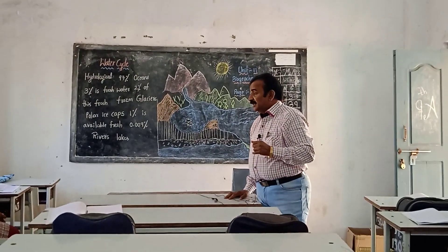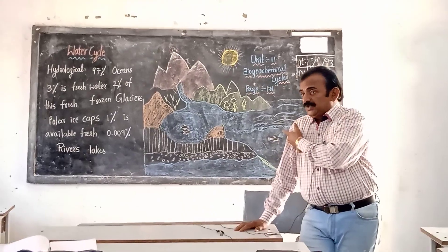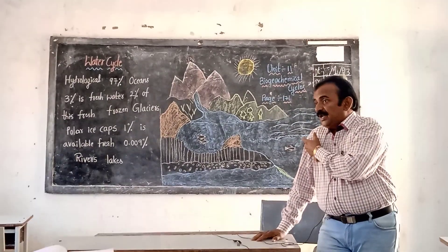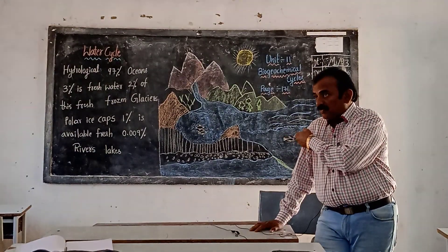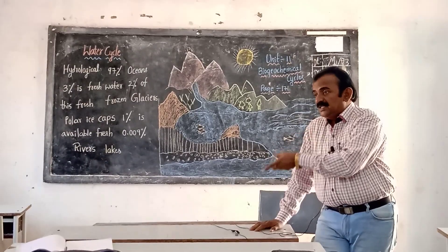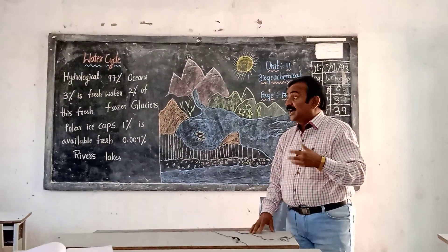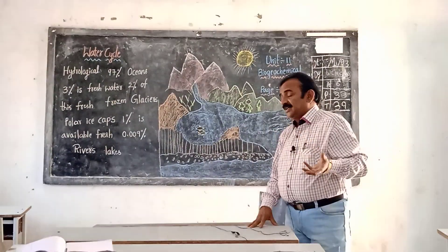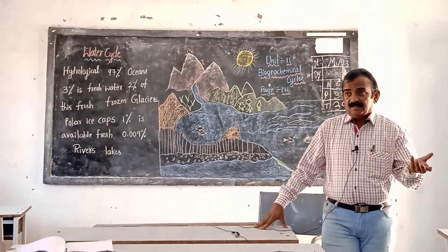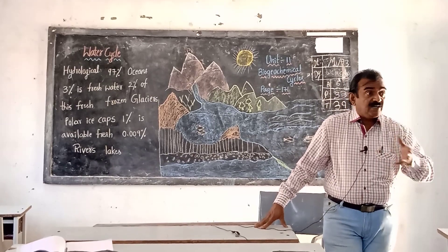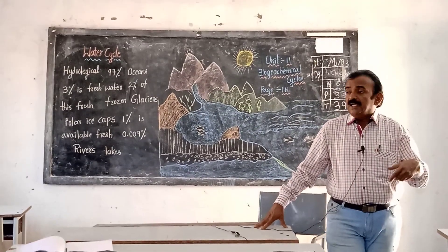That glacier water we are not using. Only 1 percent of water is present in the ground, and out of that 1 percent, 0.009 percent is present for use. We should use water in a judicious manner - we should not use water in a greedy manner. We should not waste water, otherwise we will get water scarcity.